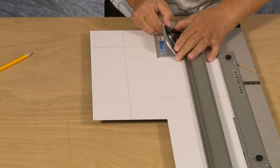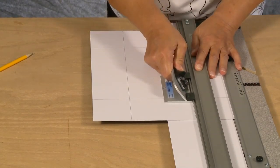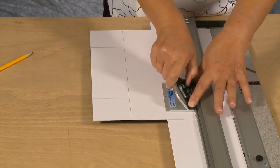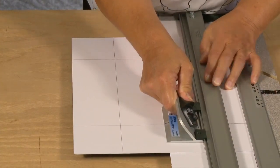Continue this process for the remaining three borders. After the fourth cut, you will have a perfectly beveled mat.